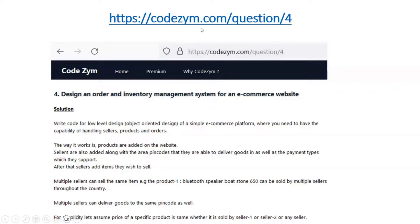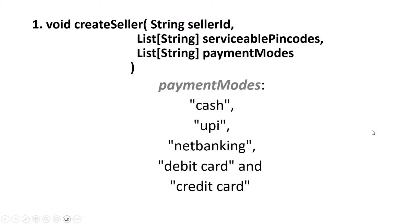This is the URL for the question on CodeGym machine coding link. I will just discuss the important methods. The first one is create seller. Every seller is going to have a unique seller ID, a list of pin codes where they can deliver the goods, and a list of payment modes which they support — which will be a sub-list of the whole set.